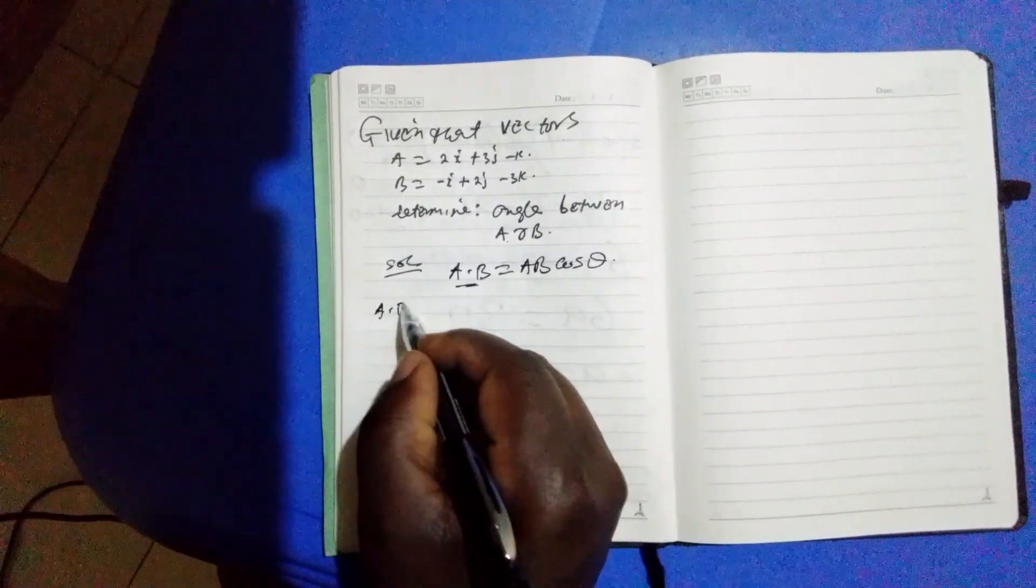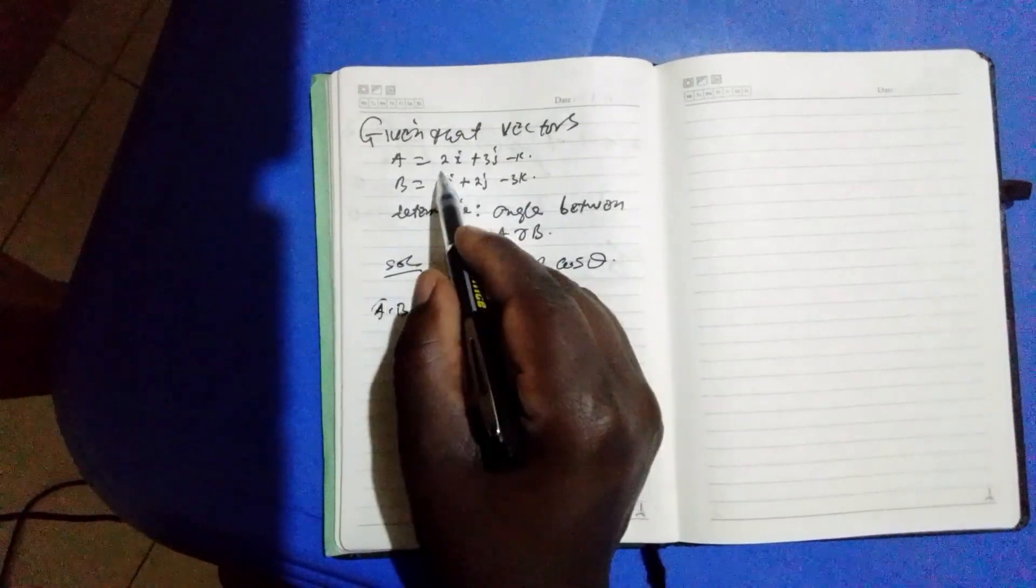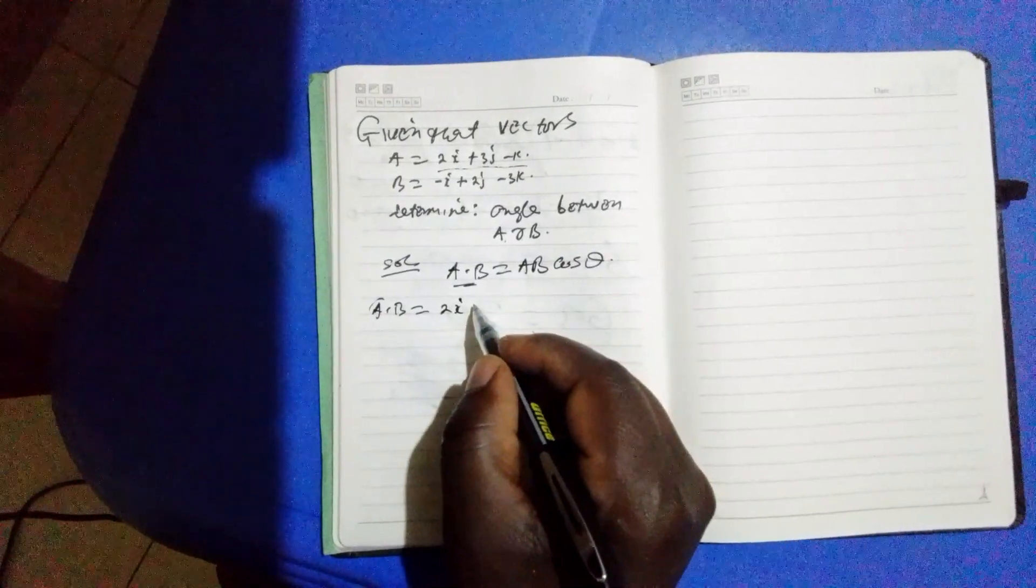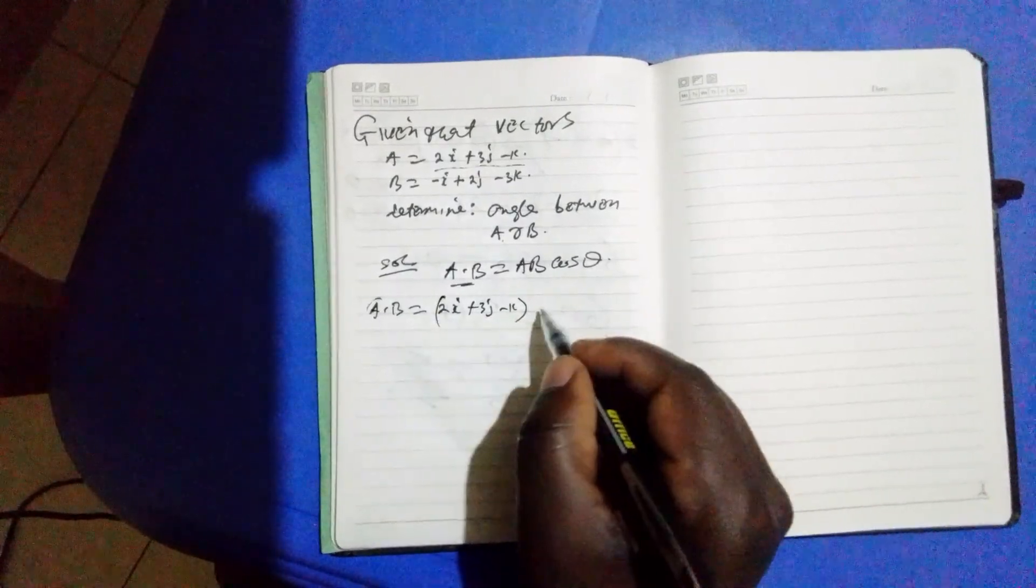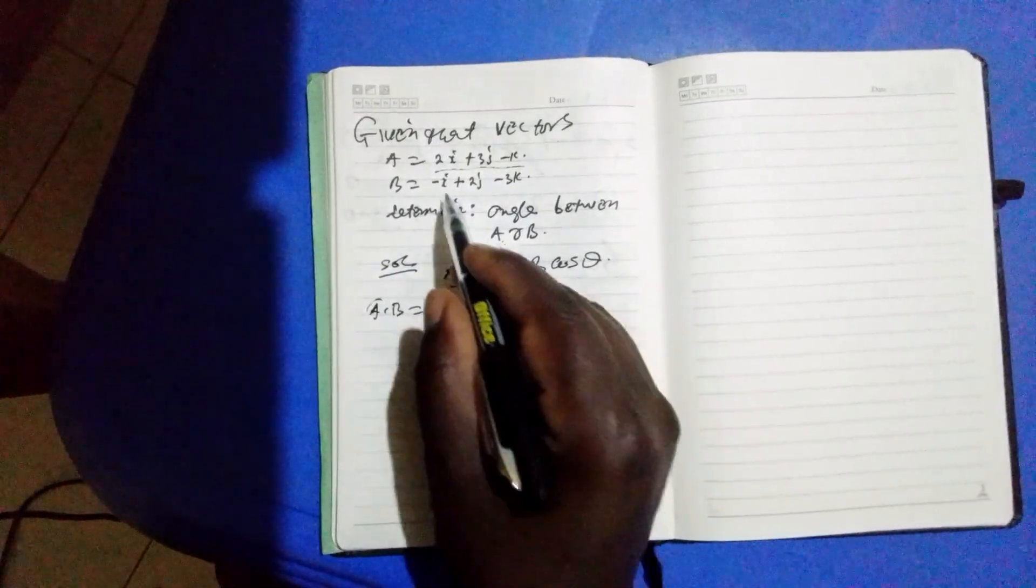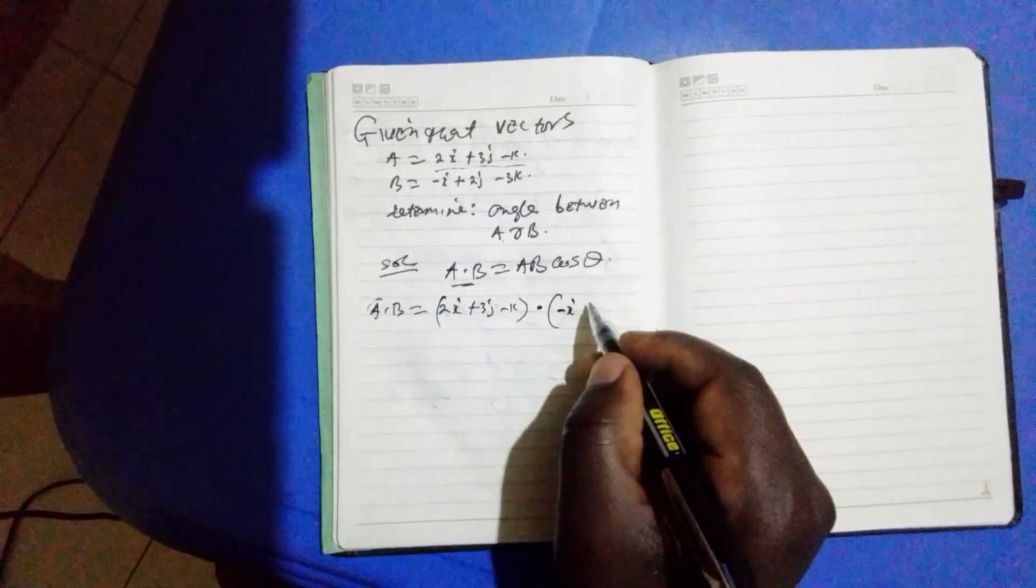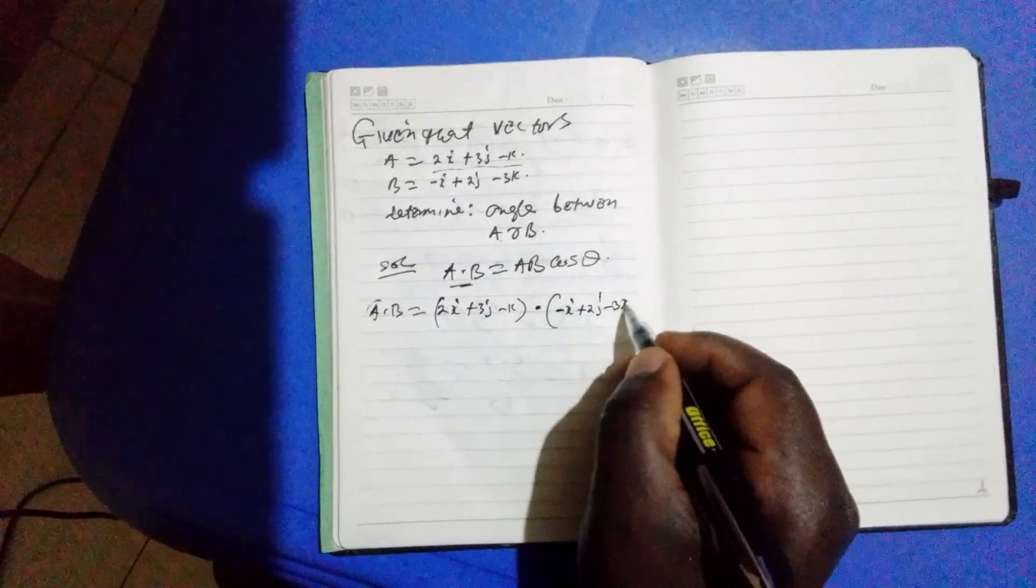Now a dot b equals to, vector a which is this one, 2i plus 3j minus k, dot negative i plus 2j minus 3k.